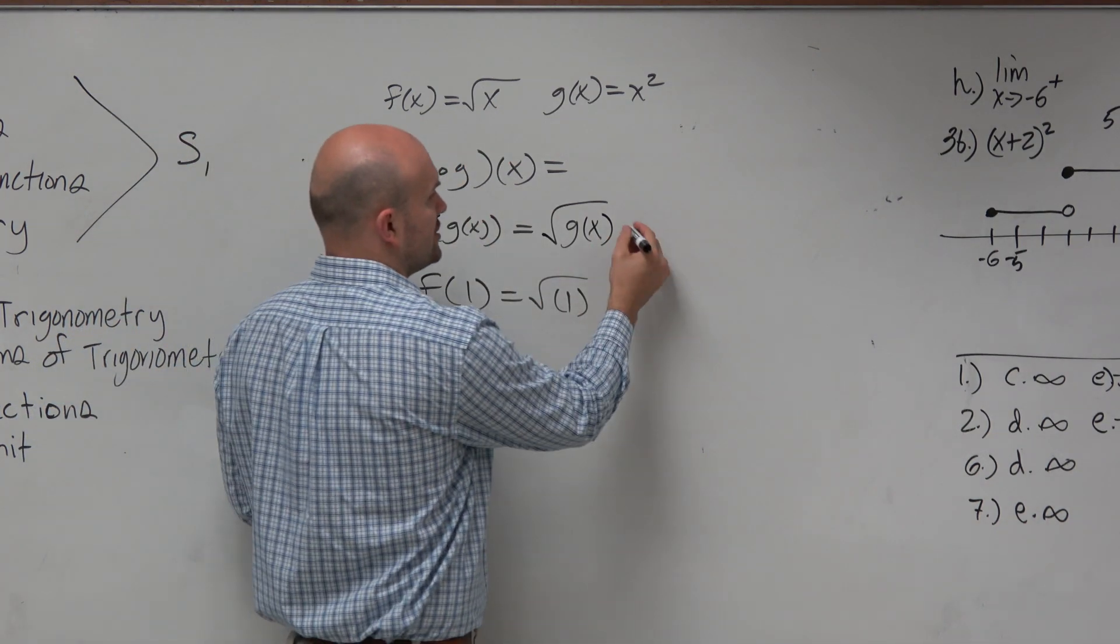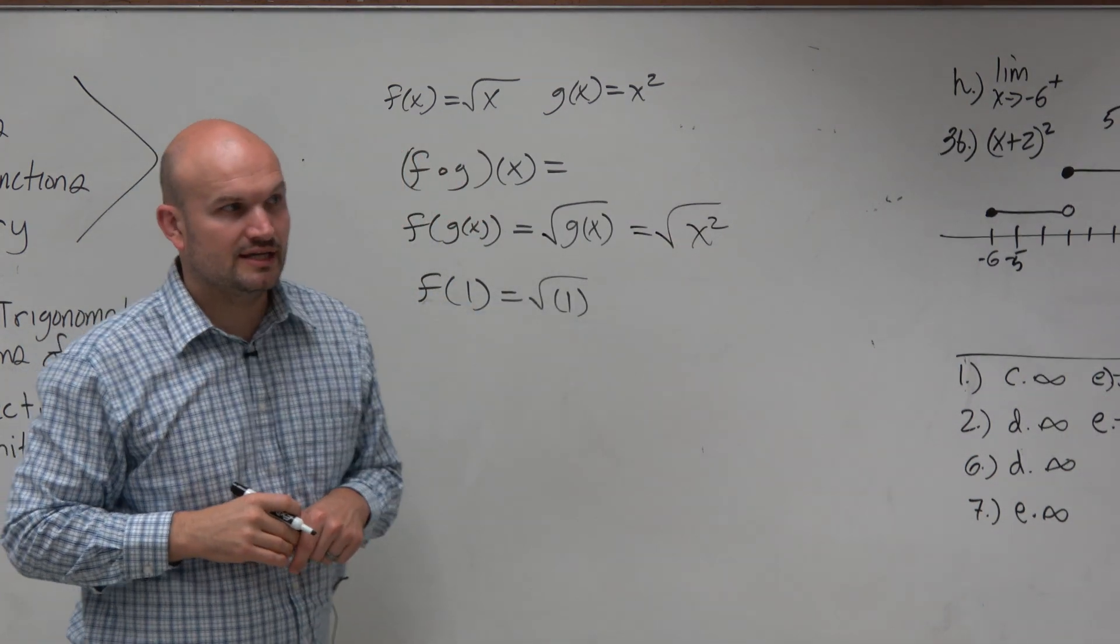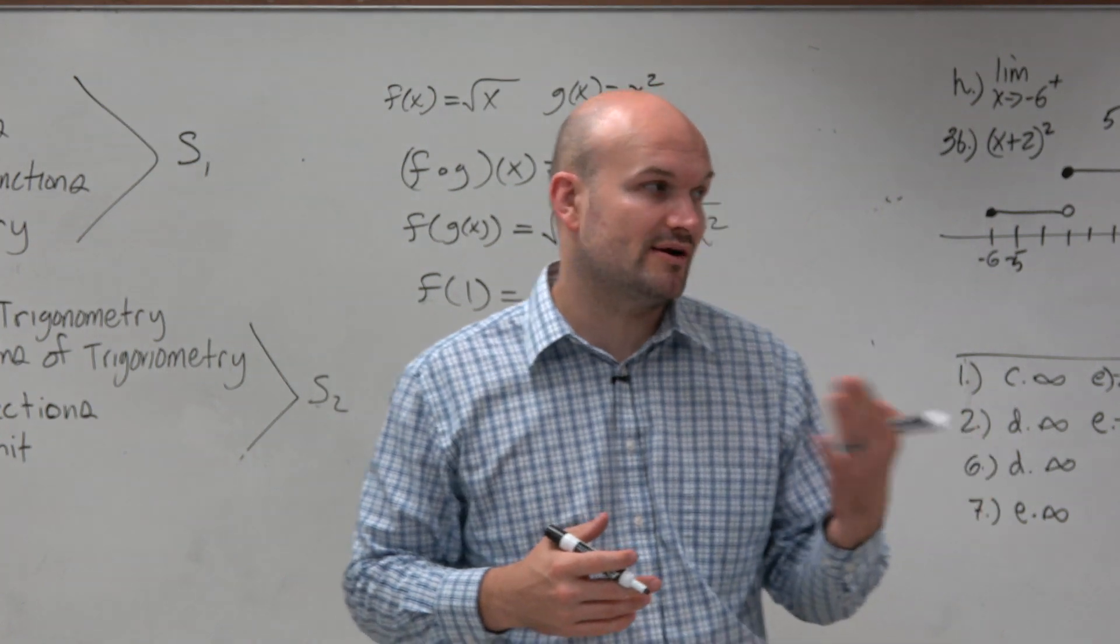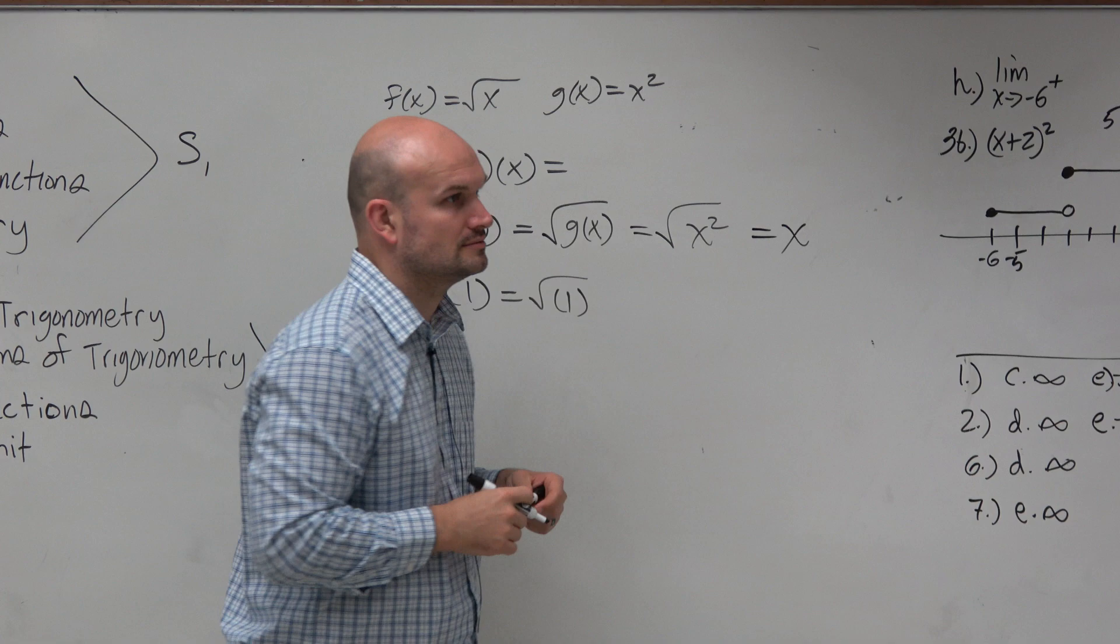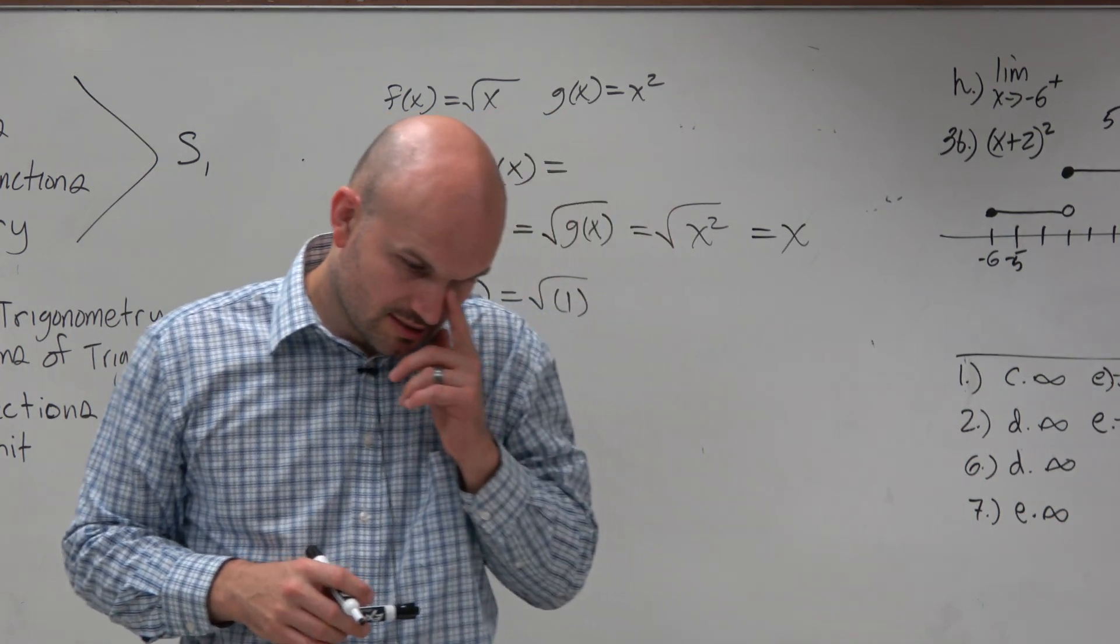And we are provided with g(x), which is x squared. And we know that the square root and the power of 2, the squaring and the square root, are inverse functions of each other. So therefore, we're just going to get x, which would have been answer choice D.